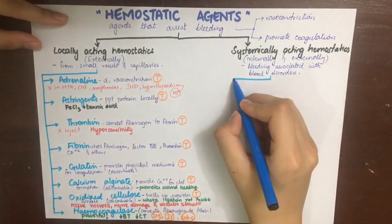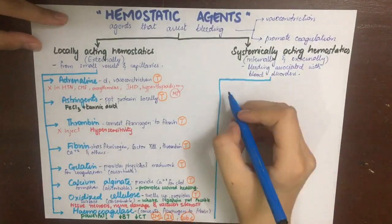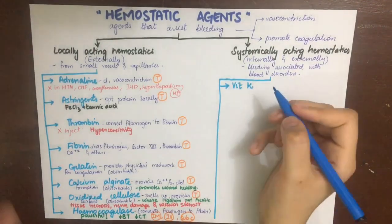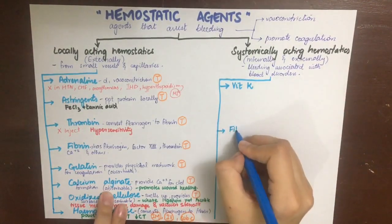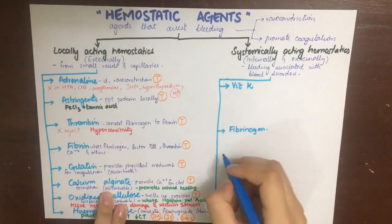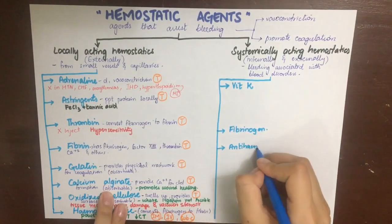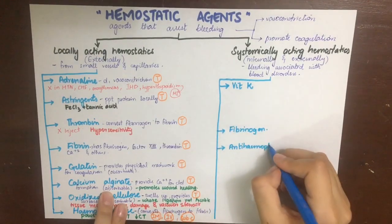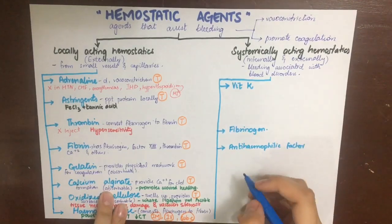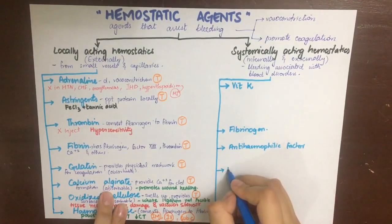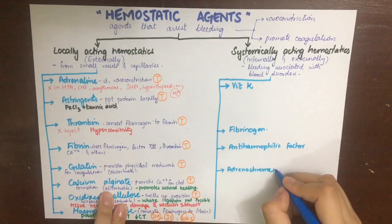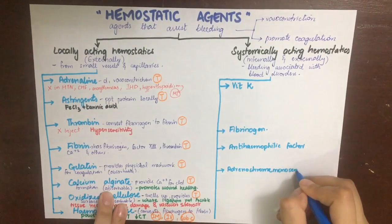Coming to the systemically acting hemostatics, we'll discuss six of them. First is vitamin K; second is fibrinogen; third is anti-haemophilic factor; fourth is adrenochrome mono-semicarbazone; fifth is ethamsylate; and lastly, desmopressin.